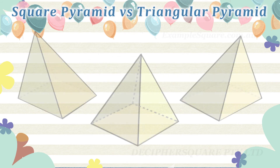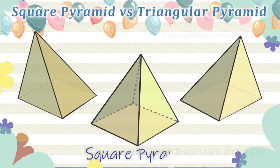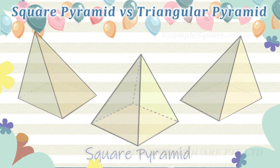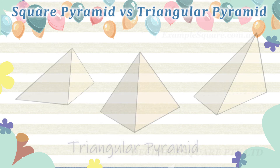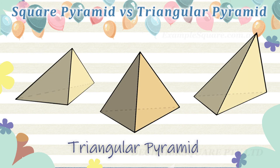Square pyramids can further be categorized into different types — for example, based upon the position of the apex. Triangular pyramids can also be categorized into different types, for example, based upon the position of the apex.